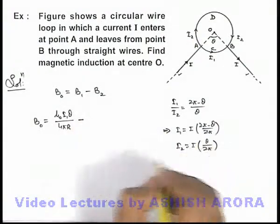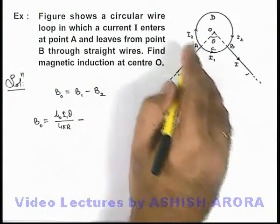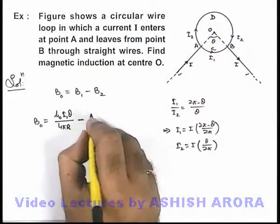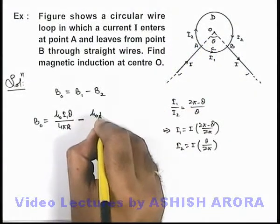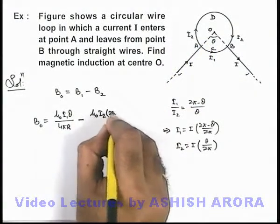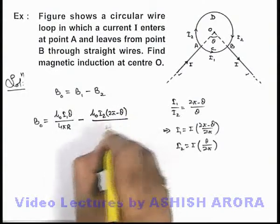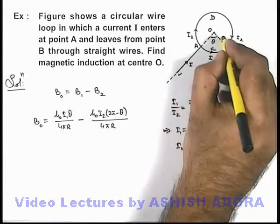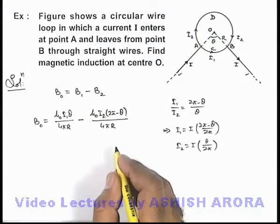Minus, B2 is the magnetic induction due to circular arc which is obtaining an angle 2π minus θ which is μ₀ i2, 2π minus θ divided by 4π r. Here r I am taking the radius of the circular arc.